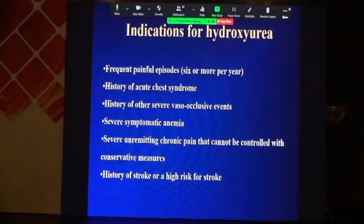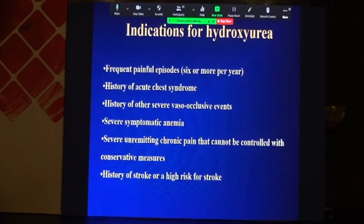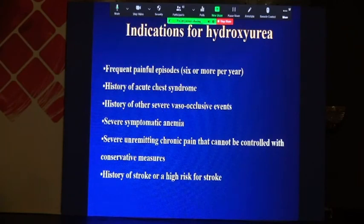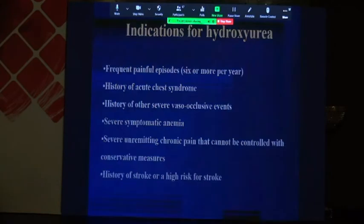What are the indications for hydroxyurea? Frequent painful episodes — six or more per year — history of acute chest syndrome, history of other severe vaso-occlusive events, severe symptomatic anemia, severe unremitting chronic pain that cannot be controlled with conservative measures, and history of stroke or high risk for stroke.